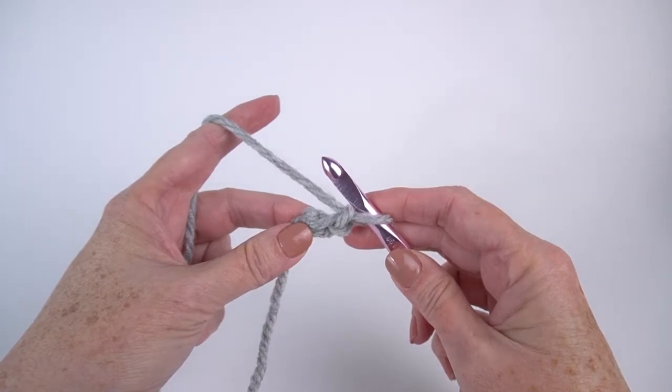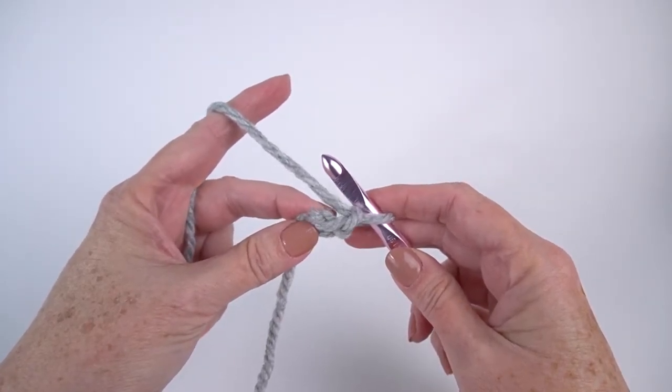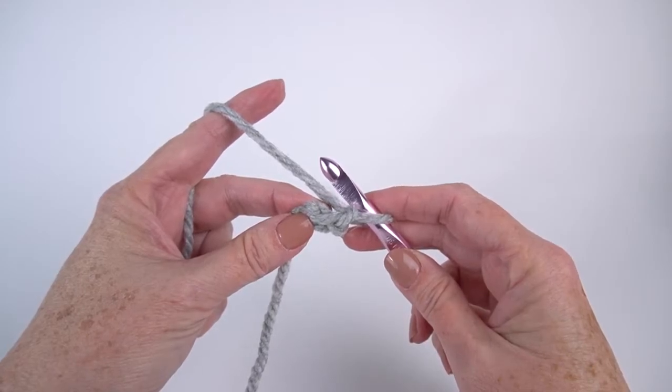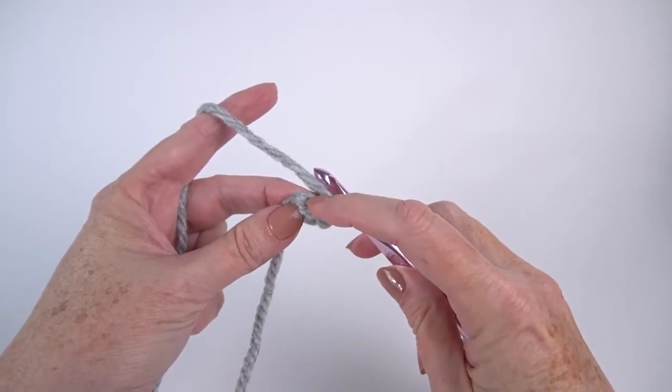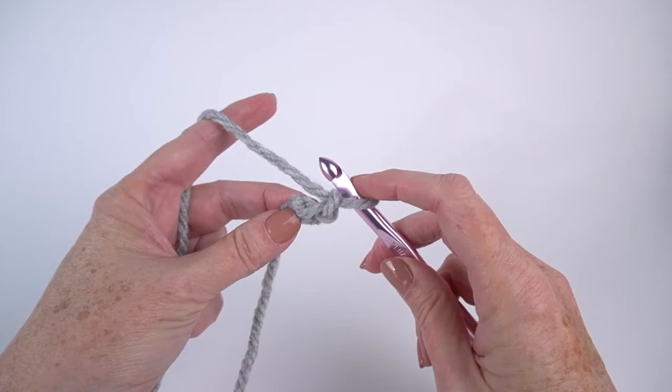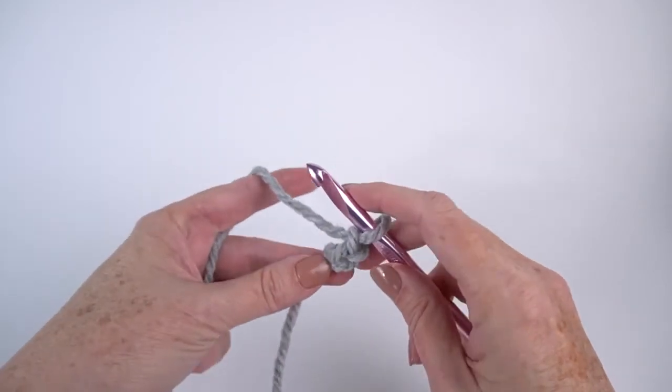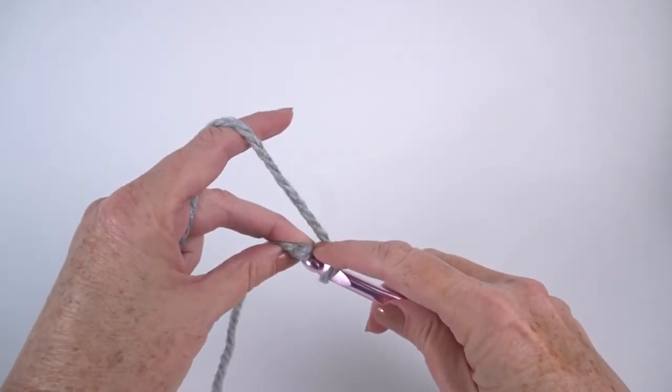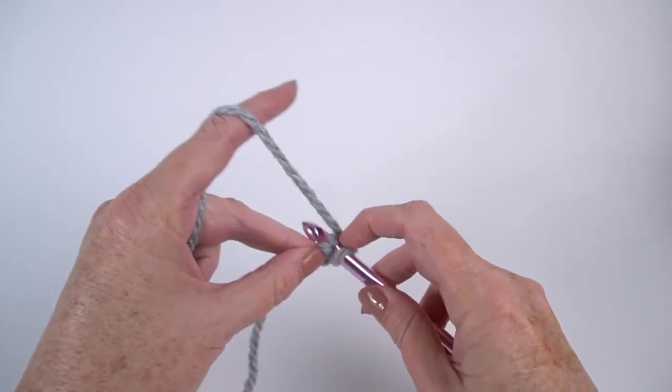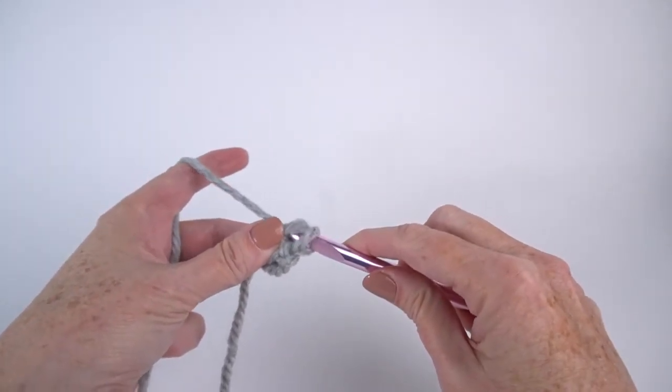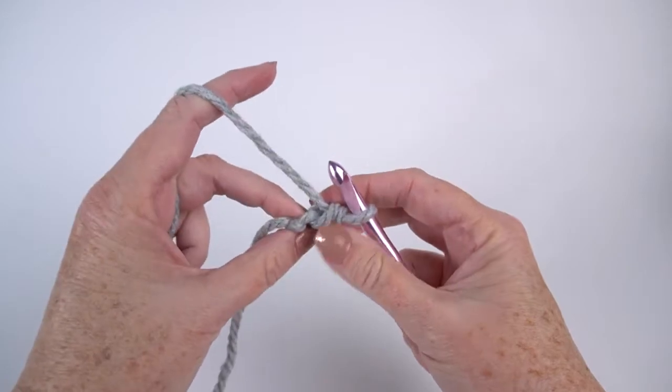Now I'm going to single crochet in the second chain from hook. And as you may know, if you've watched any of my other videos, I like to work in the back or the bump of the chain. I think it's easier particularly for this technique, but you can work in the front or V if you prefer. But here is my single crochet in the second chain from hook. So now I have my first single crochet.